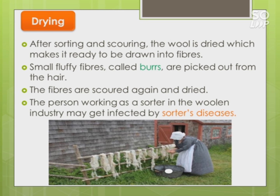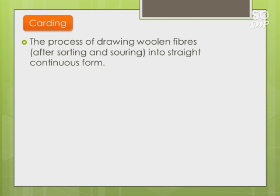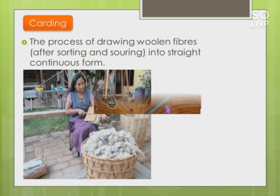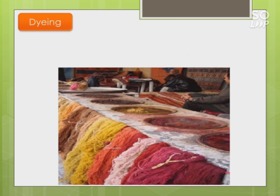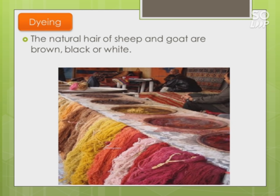The person working as a sorter in the woolen industry may get infected by sorter's disease. After drying, the next process is carding - the process of drawing woolen fibers into a straight, continuous form. This can be done manually or using a machine. The natural color of sheep is brown, black, or white, or sometimes a mixture of both.